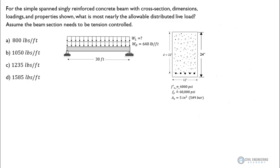The properties on this beam are listed here. We've got concrete strength, F prime sub C, of 4,000 psi. The yield strength of the steel, F sub Y, is 60,000 psi. Our area of steel for the rebar is 5 inches squared, probably coming from five number nine bars. And then we've got an array of possible answers, so let's jump into this.